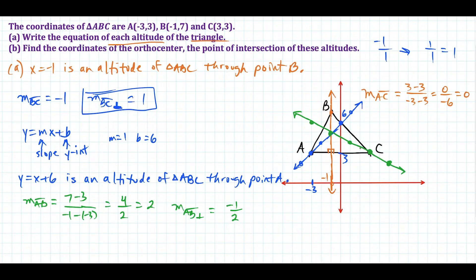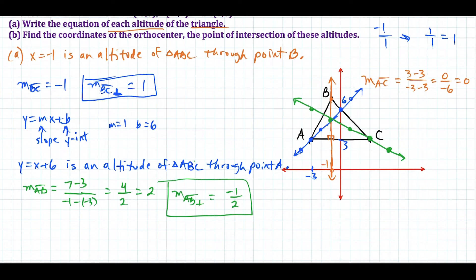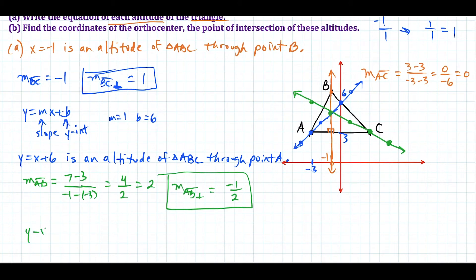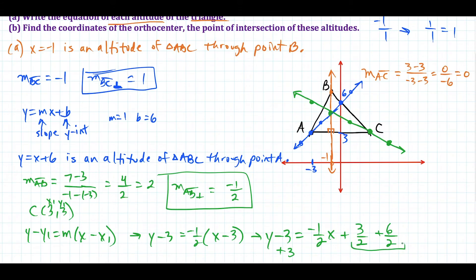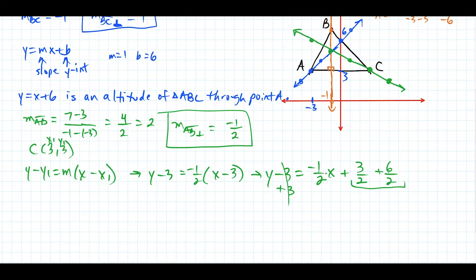We just need to write the equation of this altitude through point C. The slope is negative 1 half, and it passes through point C at (3, 3). We'll use point-slope form: y minus y1 equals m times (x minus x1). Plugging in: y minus 3 equals negative 1 half times (x minus 3). This gives us y minus 3 equals negative 1 half x plus 3 over 2. Adding 3 to both sides — writing 3 as 6 over 2 for common denominators — simplifies to y equals negative 1 half x plus 9 over 2.